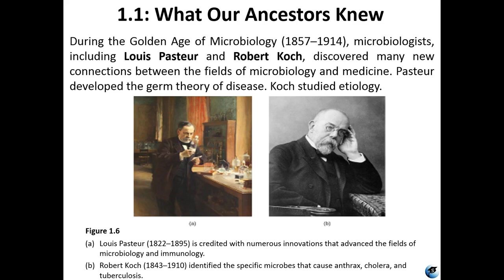Robert Koch was able to identify specific agents of infection — specific microbes that caused some of the worst illnesses in human history, including anthrax, cholera, and tuberculosis. He laid out specific postulates to determine whether a microbe was the causative agent of an illness, making him essentially the father of etiology, which concerns the factors that come together to cause illness and is the focus of epidemiological studies.